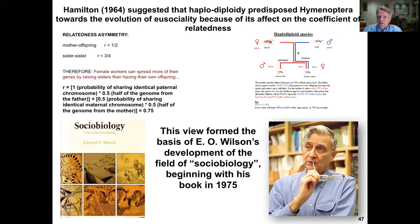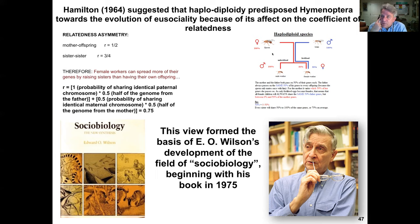This view of eusociality's origin formed the basis of E.O. Wilson's work. Wilson spent his career at Harvard and was not only an incredible entomologist but an important theoretician — he co-developed island biogeography theory with Robert MacArthur. In his controversial 1975 book Sociobiology, he argued that much of the behavior we see in animals, including aggressive behavior and even in humans, is a product of biology.